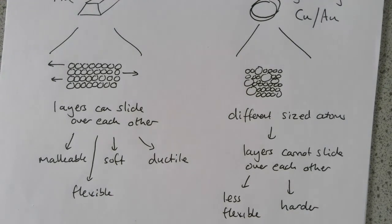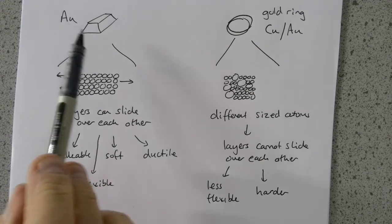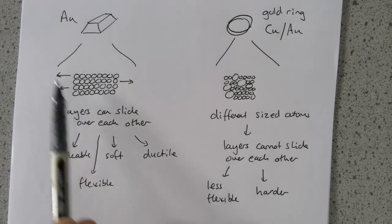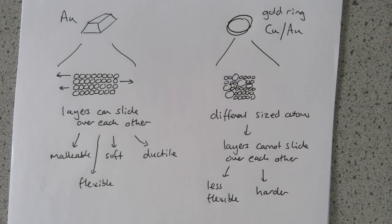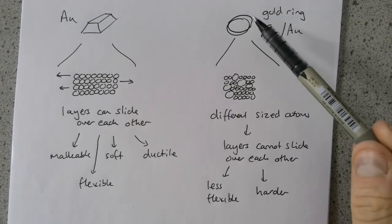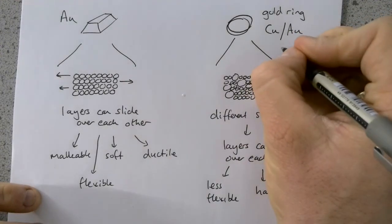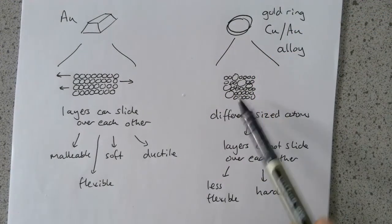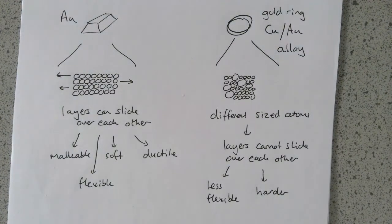There are some exceptions, but it's usually harder than the pure metal. If we just have a look at both of these together, pure metal, such as gold, the particles are arranged in layers which can slide over each other. That gives these properties to the pure metal. An alloy, such as copper and gold alloy, has different sized atoms, which means the layers are no longer able to slide over each other, which means the alloy is less flexible and harder.